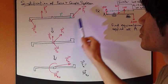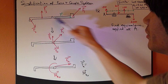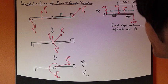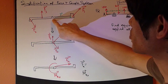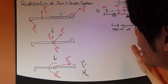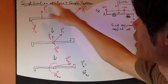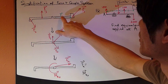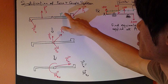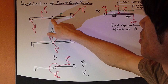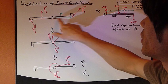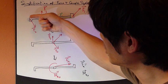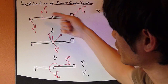Now, consider this rigid body right here. It's sort of like a wrench. It's pivoted at this point. I apply three forces: F1, F2, and F3. The position vector R1 is measured from point O, the pivot point, to F1. Similarly, R2 is from here to here and R3 is from here to here.